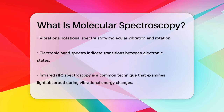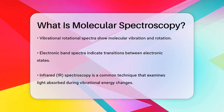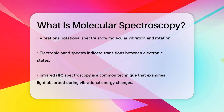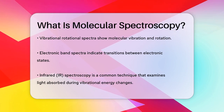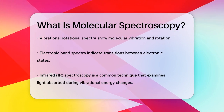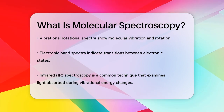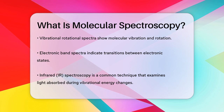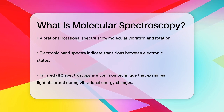One of the most common techniques in molecular spectroscopy is infrared, or IR, spectroscopy. This involves studying the light absorbed or emitted as molecules undergo vibrational energy changes. IR spectroscopy is particularly useful because it can tell us about the specific bonds within a molecule, helping us identify what's present in a sample.